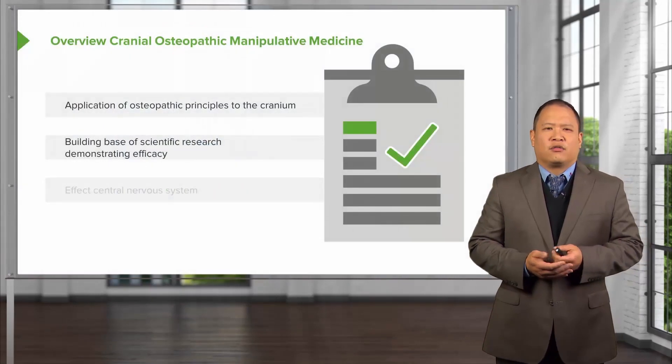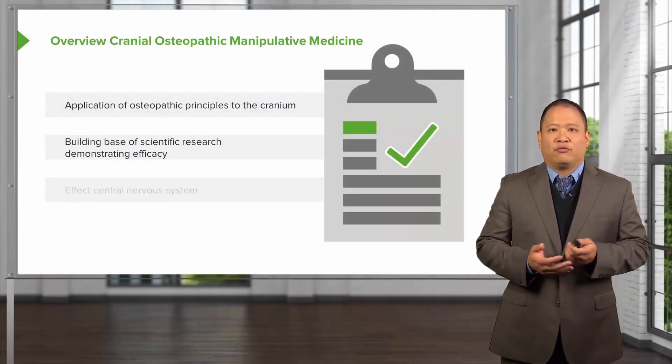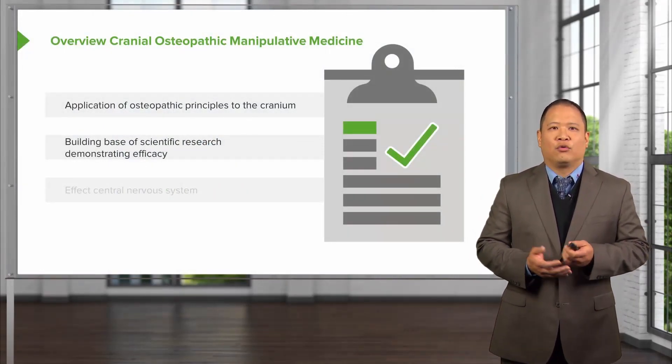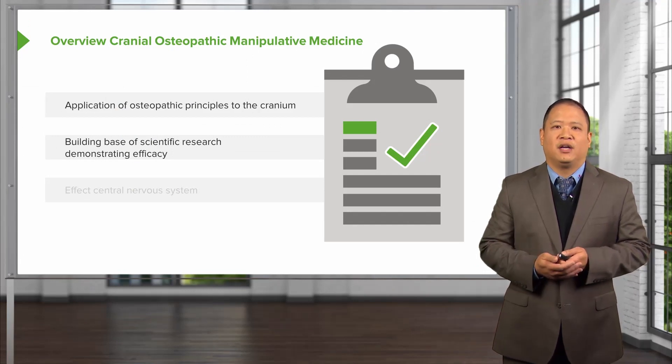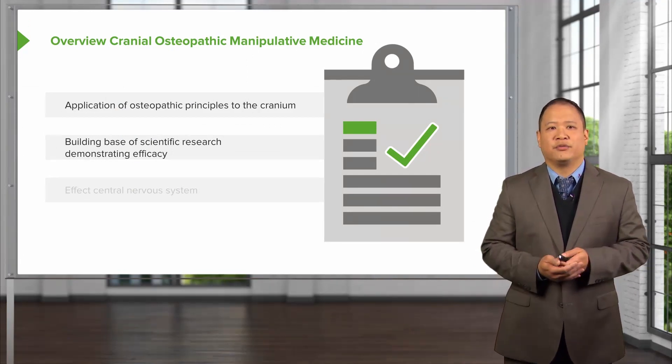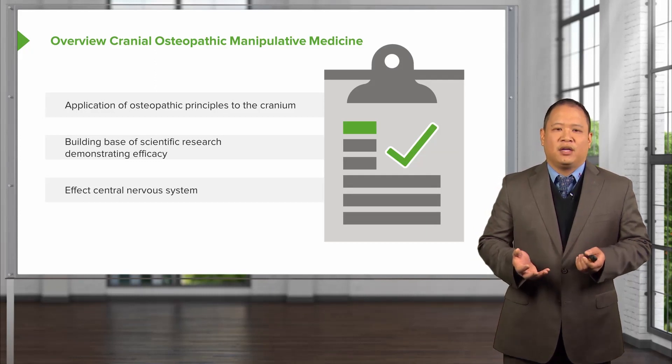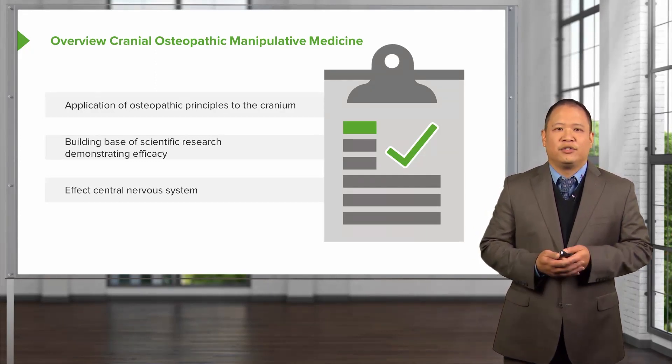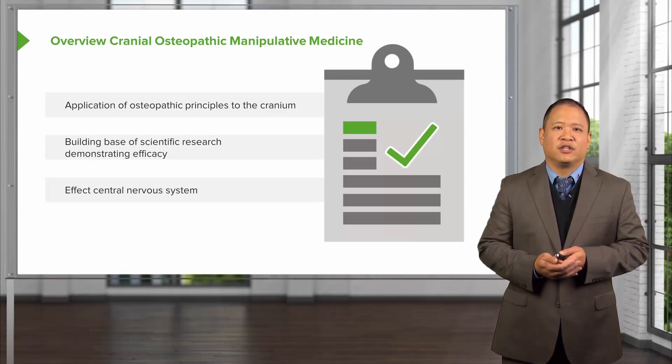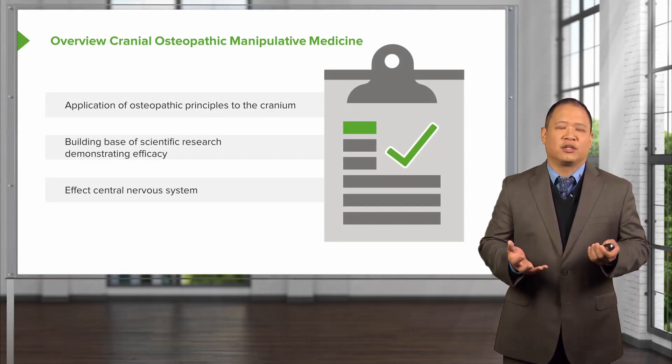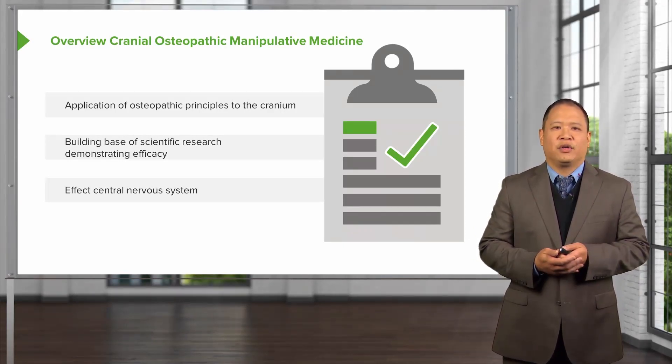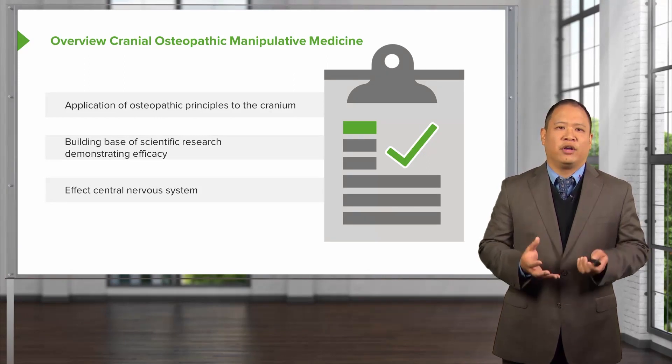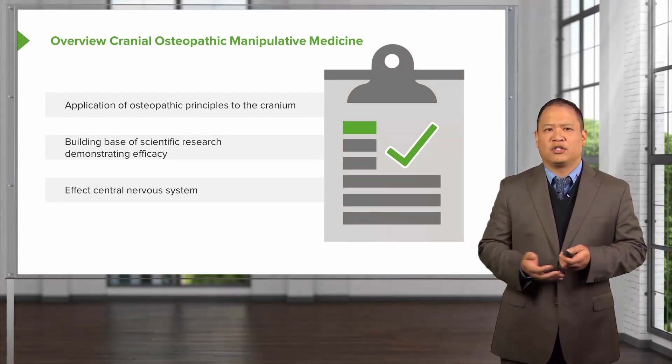There's a growing evidence of osteopathic research looking at how cranial osteopathic medicine could affect different medical problems and issues. Because of the proximity of the cranium to the central nervous system, this gives us a good opportunity to apply the neurologic model and examine how cranial osteopathic medicine could affect different neurologic conditions.